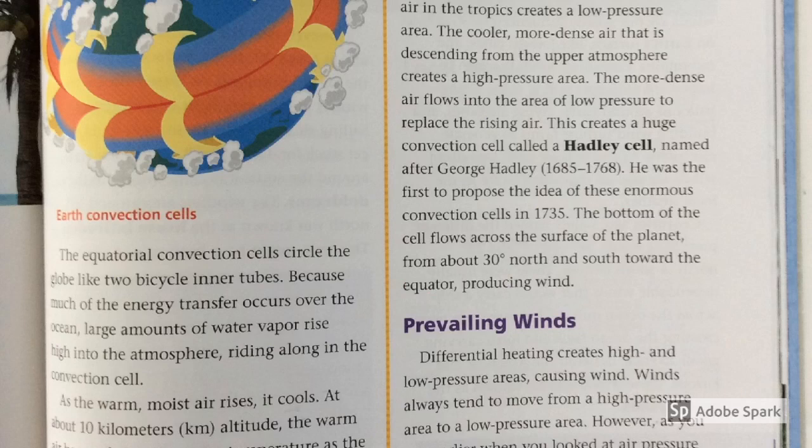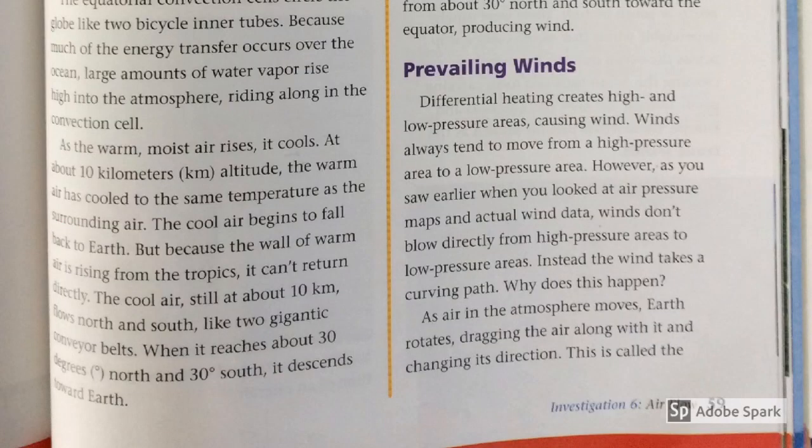The equatorial convection cells circle the globe like two bicycle inner tubes. Because much of that energy transfer occurs over the ocean, large amounts of water vapor rise high into the atmosphere, riding along in a convection cell. As the warm, moist air rises, it cools. At about 10 kilometers altitude, the warm air has cooled to the same temperature as the surrounding air.